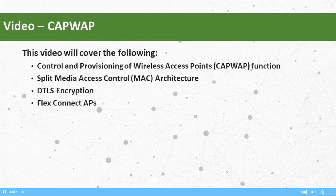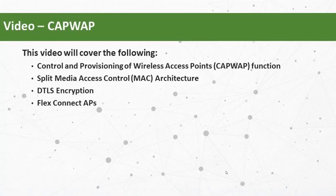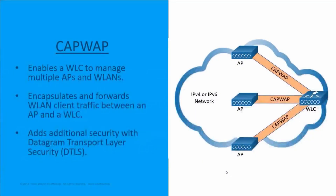Let's discuss CAPWAP, Control and Provisioning of Wireless Access Points. CAPWAP is an IEEE standard protocol that enables a wireless LAN controller to manage multiple access points and wireless local area networks. CAPWAP is responsible for the encapsulation and the forwarding of wireless LAN client traffic between an access point and a wireless LAN controller. CAPWAP establishes tunnels on UDP ports 5246 and 5247.